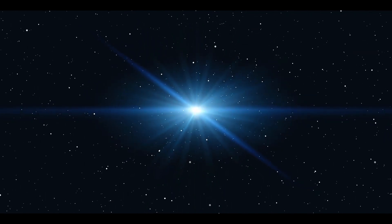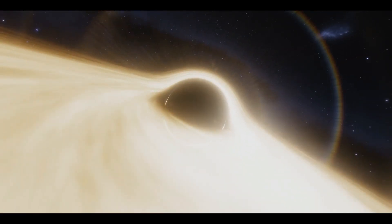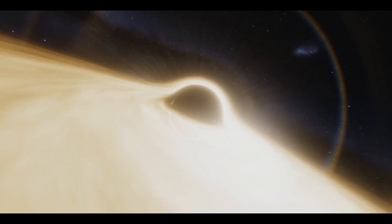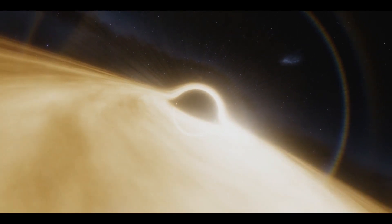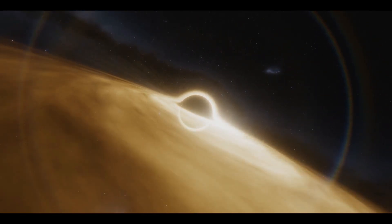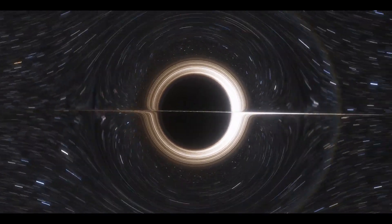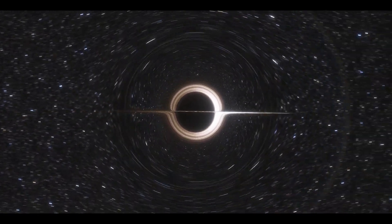Stars do wander close enough from time to time to dislodge a few comets from the farthest outer regions of the solar system, called the Oort cloud. But this is the extent of their gravitational impact on the solar system, and it would likely be the same case for any black holes or other compact masses which would wander, by happenstance, past the solar system.